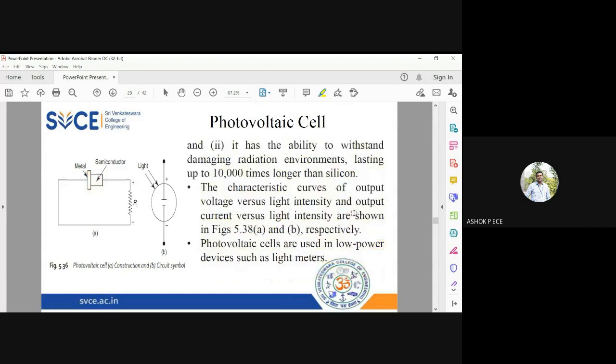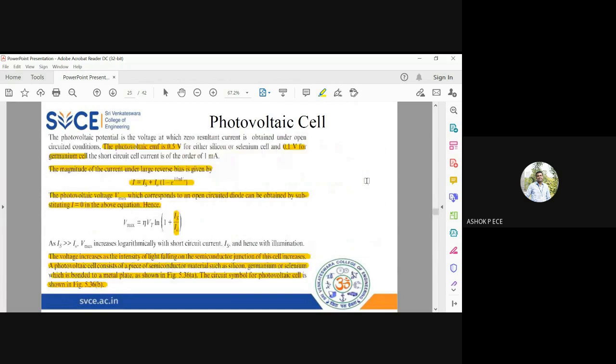Selenium has the ability to withstand damaging radiation environments up to 10,000 times stronger than silicon. If you make a solar cell based on selenium and use it inside a nuclear reactor, it can withstand radiation environments much better. The same silicon cell will not work well inside a nuclear power plant, but the selenium cell can work 10,000 times longer than silicon. This is the advantage of using selenium over silicon and germanium.